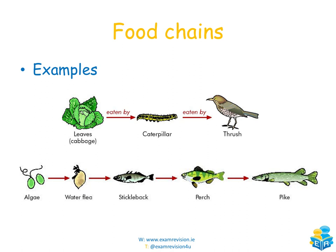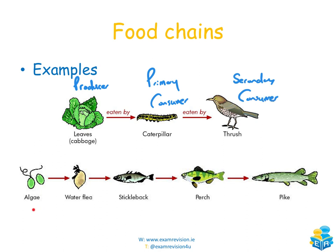Here are more examples of food chains. Leaves (primary producer) are eaten by a caterpillar (primary consumer), which is eaten by a thrush (secondary consumer). In a longer chain, we have a producer, primary consumer, secondary consumer, tertiary consumer, and even a fourth consumer — though reaching the fourth level doesn't always happen.